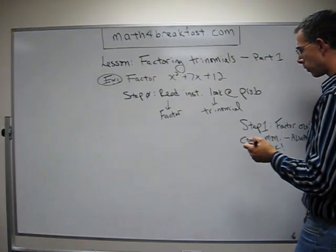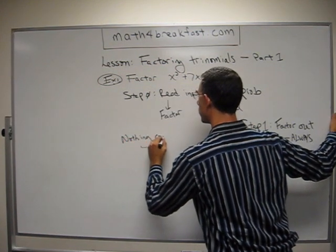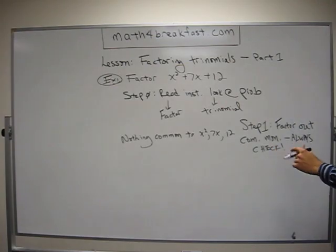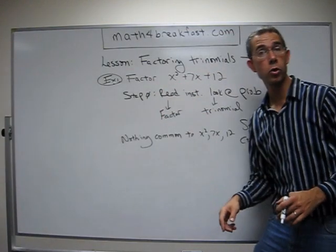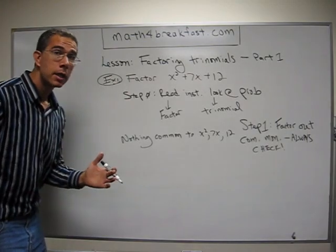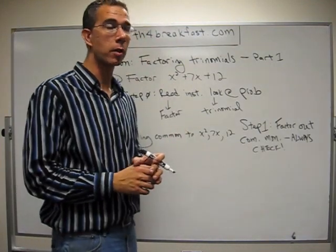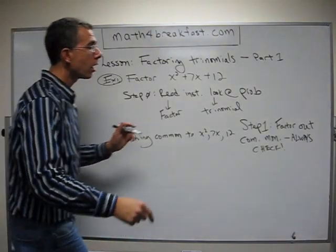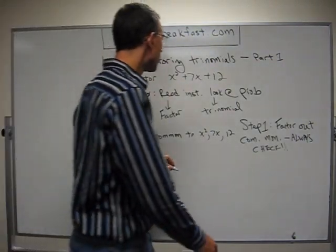What we've got is we look at our trinomial, and in this case we have nothing common to the x squared, the 7x, or the 12. So we tried. We looked at it: x squared, 7x, and 12 — is there a number that divides into all three terms? Nope. Is there a variable that is in all three of them? Not just a couple — all three of them. So we tried. And the value of trying is that if there was one and we didn't try, it would be a pain to finish this problem. So we want to always check.